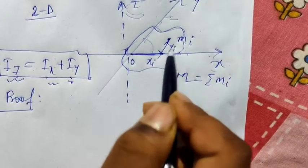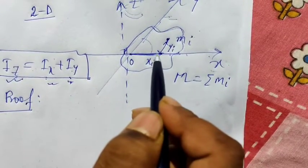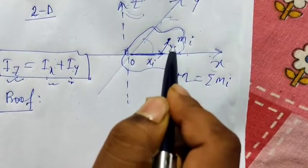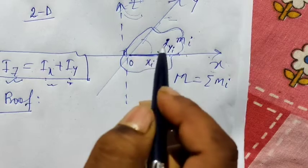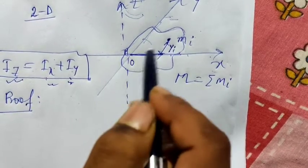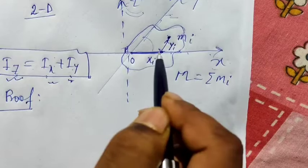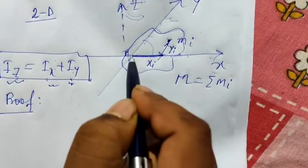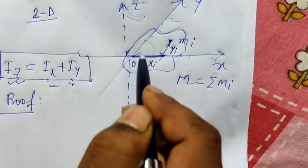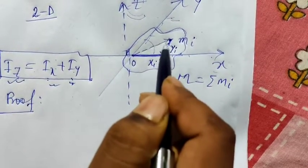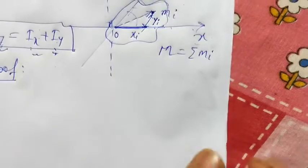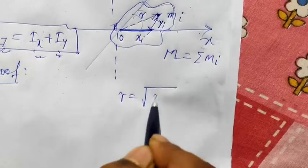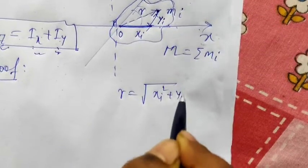For a point mass, the distance from the x-axis is yi, and the distance from the y-axis is xi. The distance of the point mass from the origin is ri, which is equal to the square root of xi squared plus yi squared.